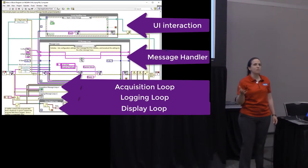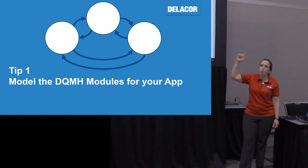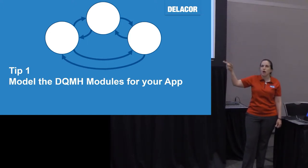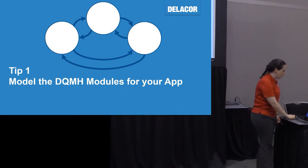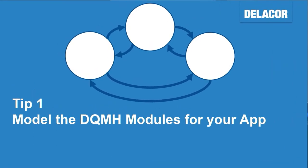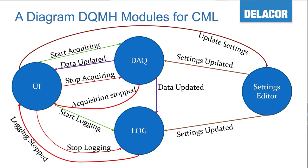Tip one: model your DQMH. Figure out what those bubbles are and what those arrows are. This step is very important because it's easier to throw away a piece of napkin or erase a whiteboard than to throw away code you've already invested in. This is an example of a diagram — just a diagram, because there's never really 'the' diagram. We have a UI module, a data module, a log module, the settings editor, and messages like start acquiring, data updated, et cetera.